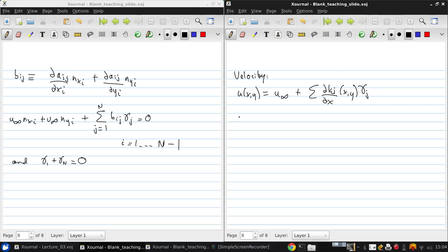And v(x,y) is v_infinity + sum of dK_j/dy(x,y) times gamma_j.